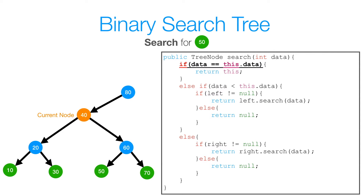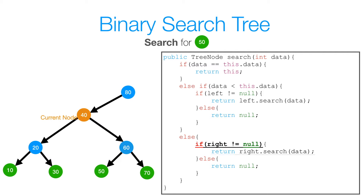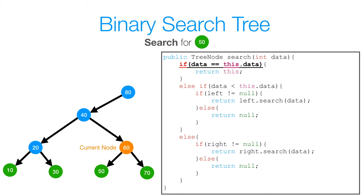We're back to the start of our method again. We check if 50 is equal to 40, and 50 is not equal to 40. So we check if 50 is less than 40 — 50 is not less than 40, so we jump to our else and check if our right is not equal to null, for the same reason we checked left. Since 40's right is not null, we call search on 40's right subtree. Again back at the start of the method: we check if 50 is equal to 60 — it's not — so we check if 50 is less than 60. Since it is, we check if left is not null, and it's not, so we call search on 60's left subtree.